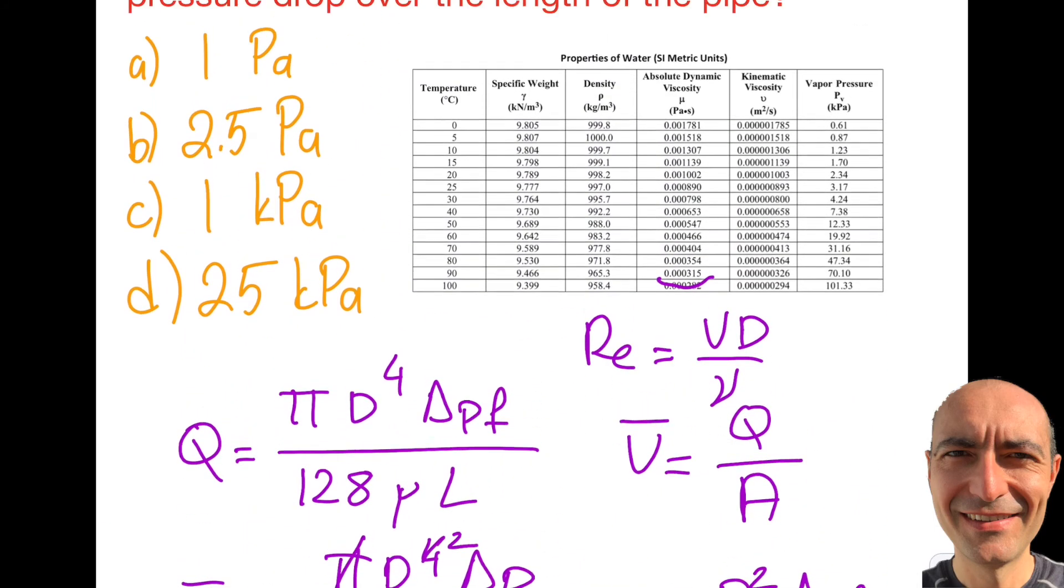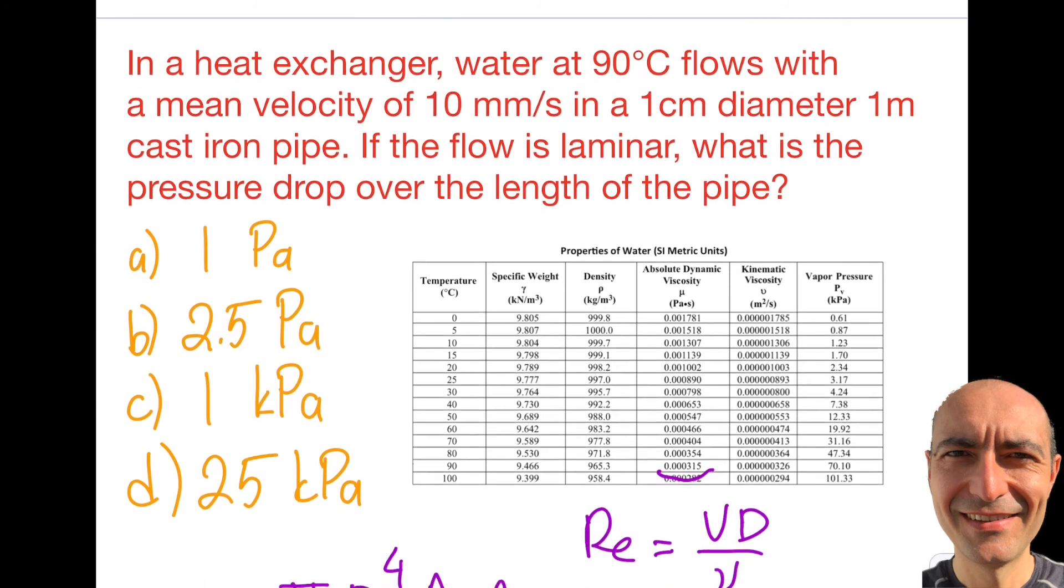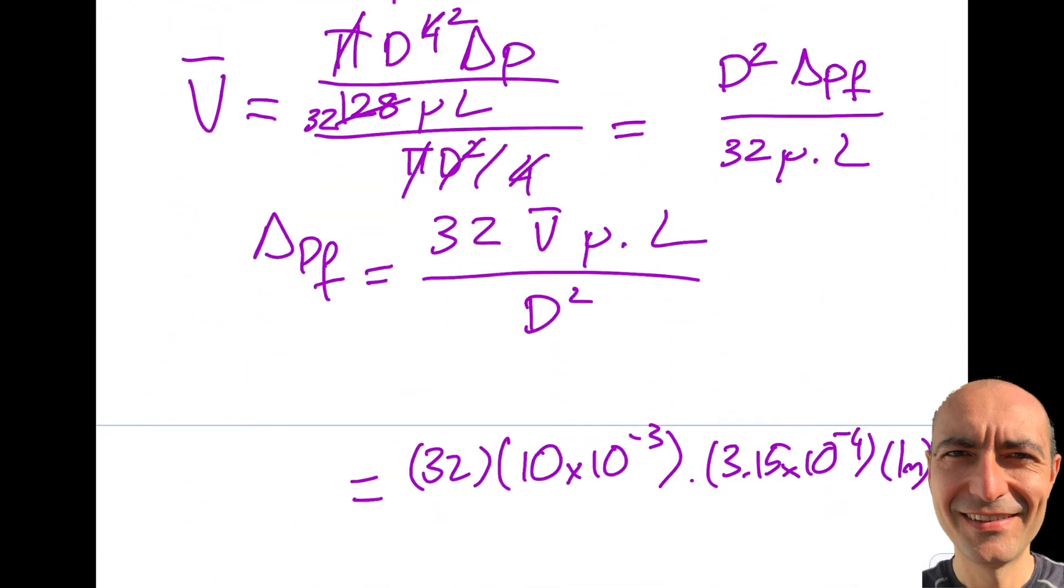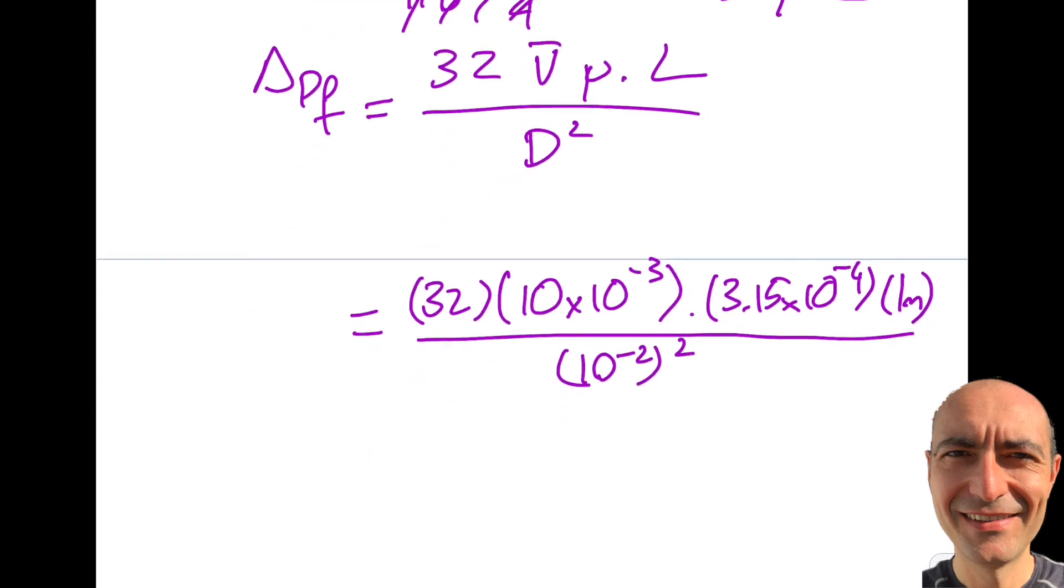Length, let's look at the length. I gave you 1 meter and the diameter is 1 centimeter. So this is 1 meter and the diameter is 10 to the minus 2, which is squared. If I take a look at it, let's see what I'm going to get. 10 to the minus 4 is kind of canceling here. So this becomes 10 to the minus 2. So 32 times 3.15, actually I don't need a calculator. 32 times 3.15 is approximately 100, give or take, and then I'm dividing by 100. So this will be one Pascal.